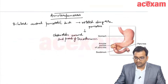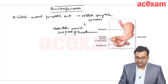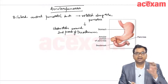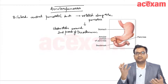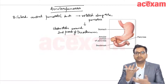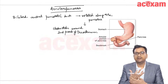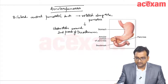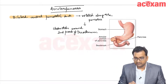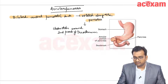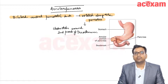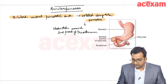That is annular pancreas. Now what happens in annular pancreas is — we know that there is a ventral bud and a dorsal bud, and there is a rotation and fusion. The dorsal bud comes here and fuses with the ventral bud to form the pancreas. Now what happens here is that there is a bilobed ventral pancreatic duct.